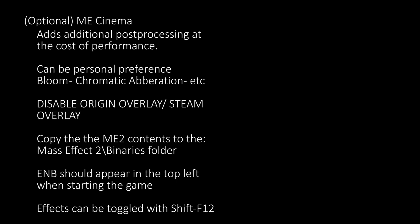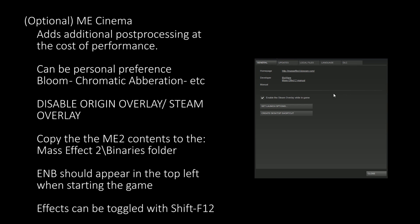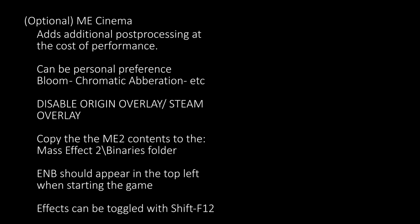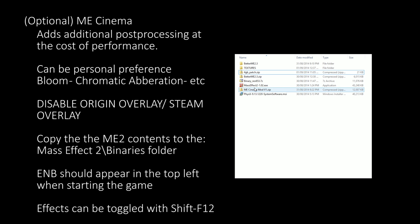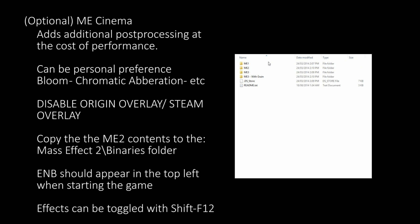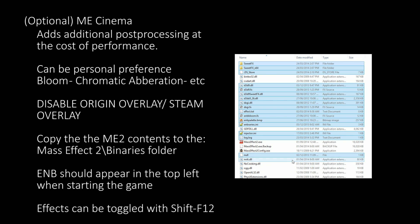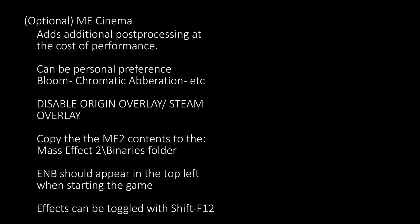The final third-party mod we're going to install is the ME Cinema mod. This mod adds additional post-processing effects to the game, and the changes may not be for everyone. You will first need to disable any overlays. For Steam this can be done by right-clicking the game in the Steam library, choosing Properties and unticking Enable Steam Overlay. For Origin, right-click the game in the Origin library, choose Game Properties, then tick the Disable Overlay button. From here, extract the contents of the ME Cinema file and open until you find the ME2 folder. Then copy the contents of the ME2 folder to the Binaries folder under Mass Effect 2. When starting the game you should now see EMB at the top left, and the effects can be toggled using Shift and F12.